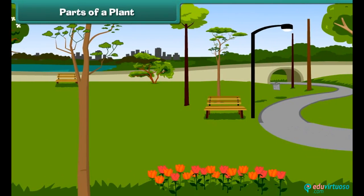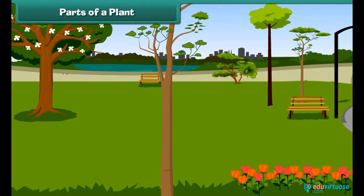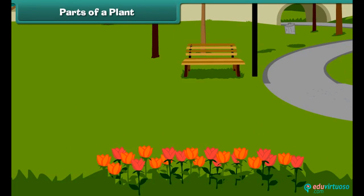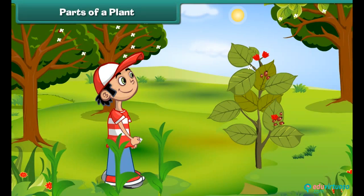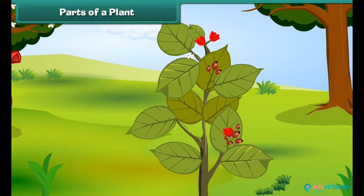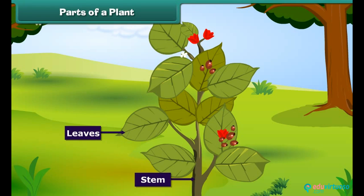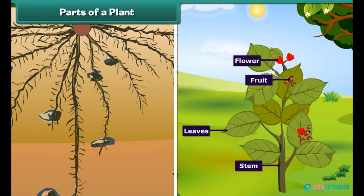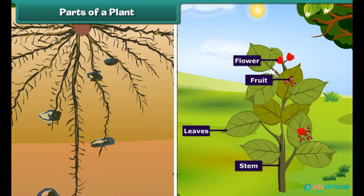Dear friends, as we can see around us, there are a lot of varieties of plants and trees. They are all green in colour and provide ease to our eyes. But have you ever observed a plant closely? You can see some of its major parts — such as stem, leaves, flowers and fruits — above the ground. But did you know that some part is also hidden under the ground? This part is called the root.